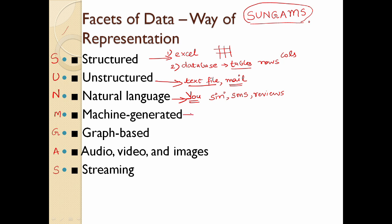Machine Generated — also called System Generated. The best example is bytecode. In Java, there is bytecode. Bytecode is not a C compiler — it is machine-generated code. This is number-specific; the computer generates the data.